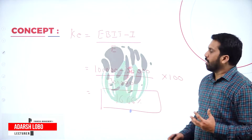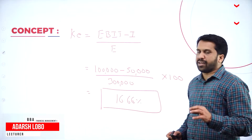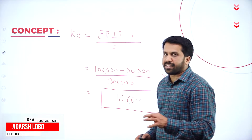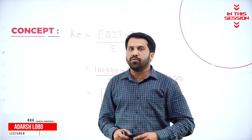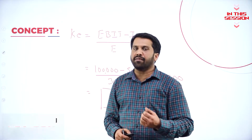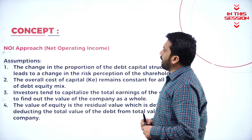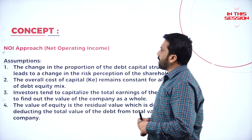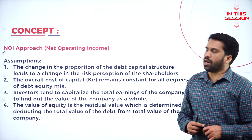What is a verification? Whatever you have done, whether it is correct or wrong, how to find out you have done right? The concept is the NOI approach — the net operating income approach. We have assumptions like the value of the firm. The formula is EBIT divided by cost of capital.